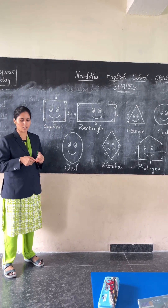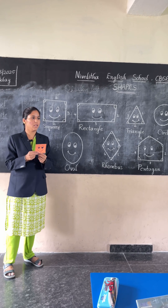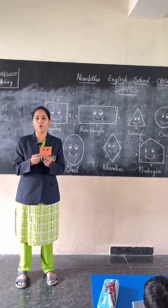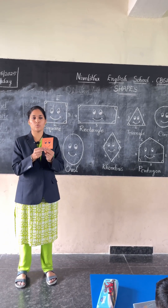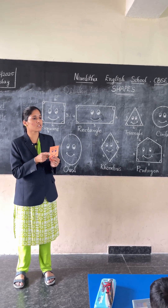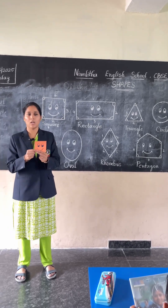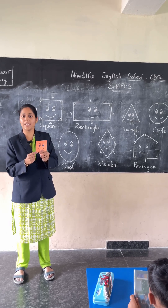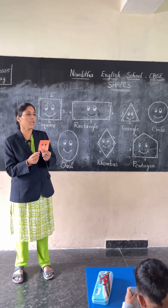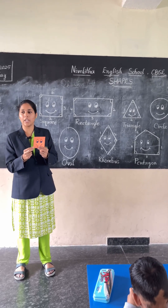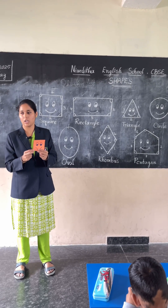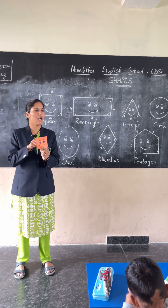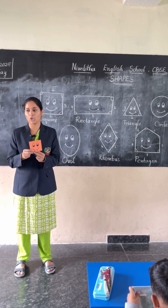The first one is a square. It has four sides and four corners. What is a side? The straight line. What is a corner? The sides where they are joining — that is called a corner. So it has four sides and four corners.